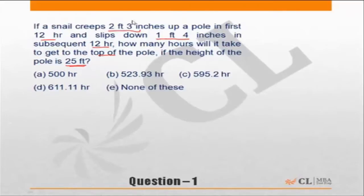First of all, let us convert everything into inches so that our task becomes slightly easier. 2 feet 3 inches is 27 inches. 1 foot 4 inches is 16 inches. So in the first 12 hours, the snail goes up by 27 inches. In the next 12 hours, it slips by 16 inches.